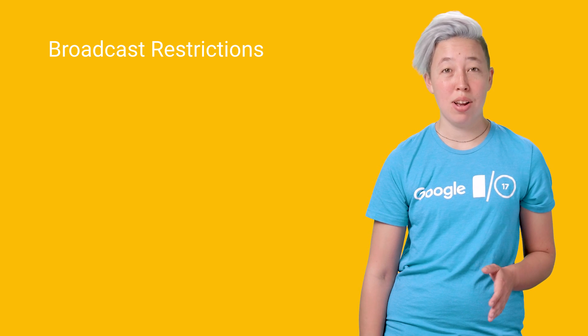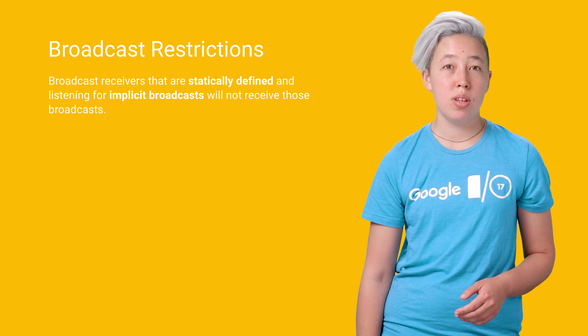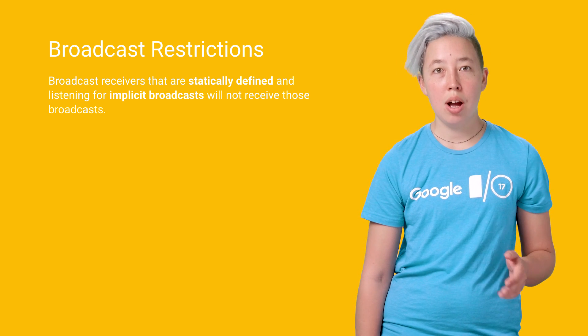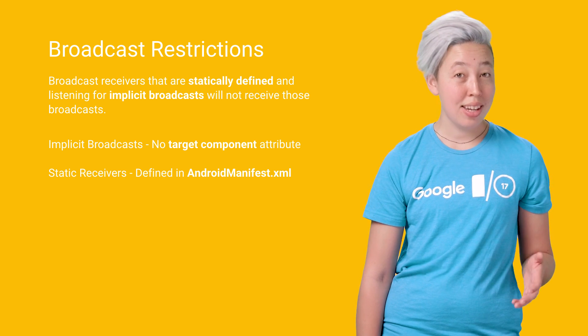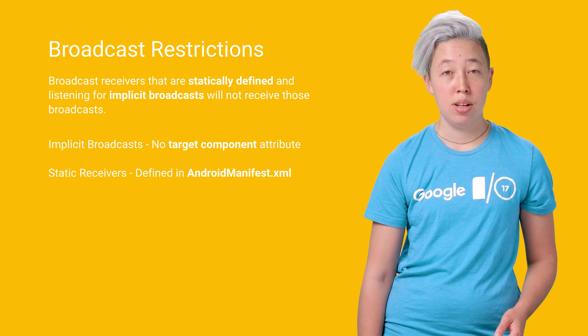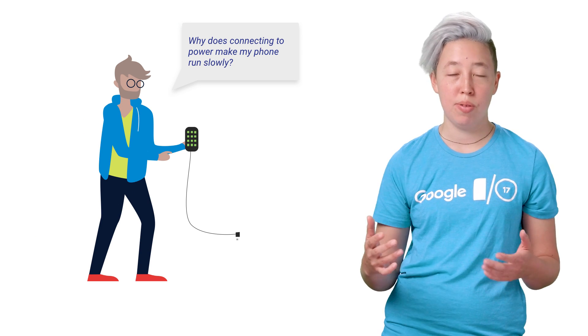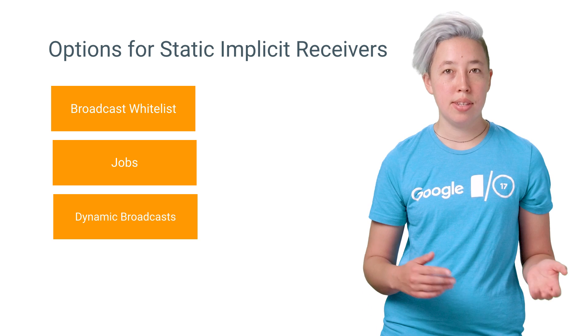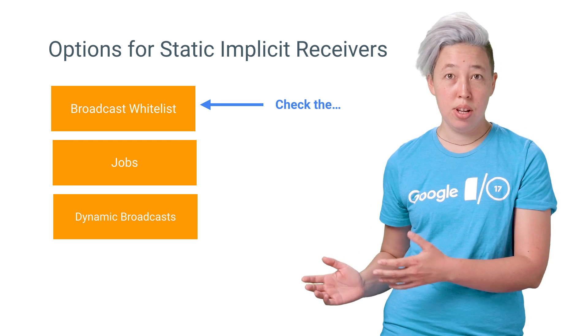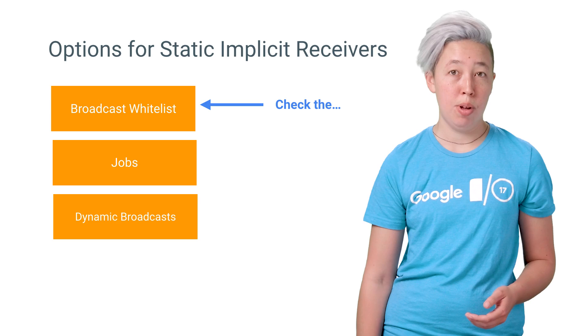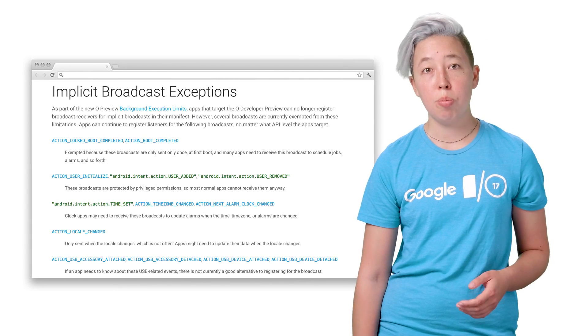Let's switch to talking about implicit broadcast receiver limitations. Broadcast receivers that are statically defined and listening for implicit broadcasts will not receive those broadcasts. Implicit broadcasts do not have the target component attribute set, and static broadcast receivers are defined in the Android manifest. Prior to Android Oreo, implicit broadcasts would trigger any component listening for them in the manifest. In resource-constrained situations, this would cause memory thrashing as a single broadcast triggered the creation of a bunch of different components from different apps. There's a short list of exceptions, so you should absolutely check that list first. If the broadcast is on that list, it won't be affected and will function as normal. This list contains things such as changing locale or plugging in headphones — the full document is linked.